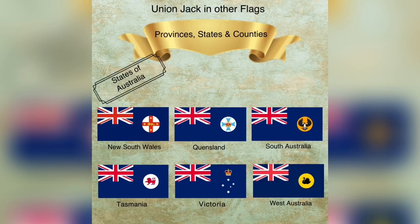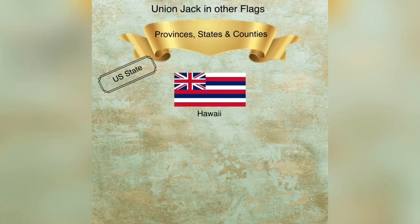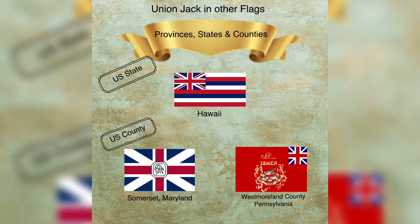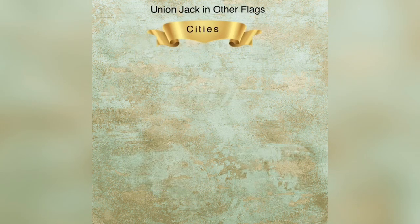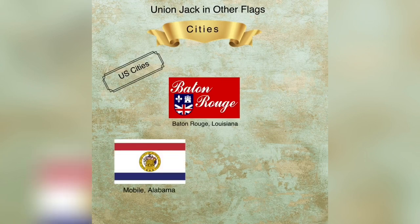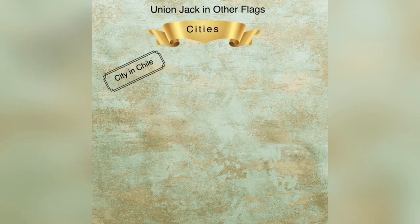The flag of the US state of Hawaii and the US counties of Somerset, Maryland and West Maryland County, Pennsylvania also bear the Union Jack. The flags of some cities across the world also bear the Union Jack, including the US cities of Baton Rouge, Mobile, and Taunton, and the Chilean city of Coquimbo.